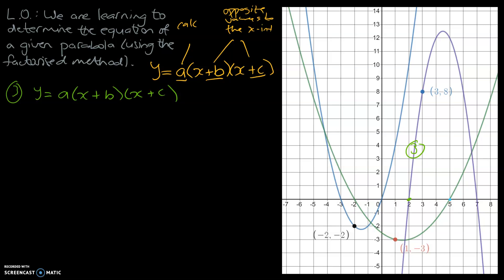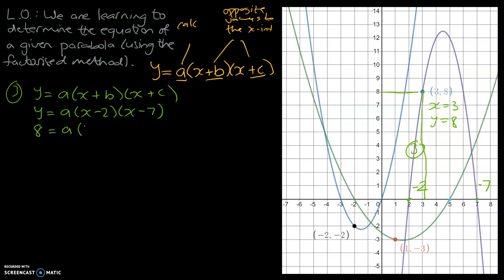Let's have a look at the x-intercepts. We've got one at 2 — the opposite of 2 is negative 2 — and one at 7 — the opposite of 7 is negative 7. So those are our b and c values: y equals a times (x minus 2)(x minus 7). We now need to find an x and y value. The given point is 3, 8 — so x equals 3 and y equals 8.